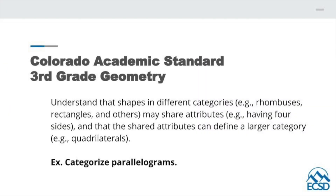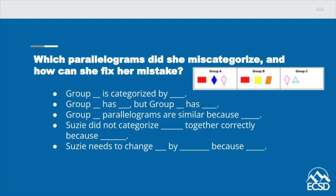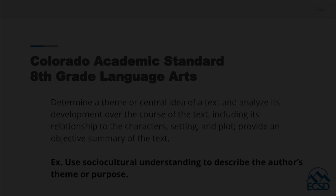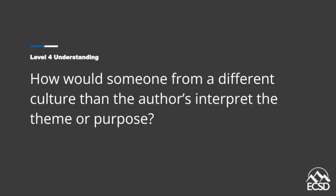Let's look at some examples of how students can achieve a 4. In third grade, students are expected to be able to categorize parallelograms. An example of a level 4 task could be evaluating a student's misconception — for example, Susie miscategorized several parallelograms. Which parallelograms did she miscategorize and how can she fix her mistake? In middle school, students are expected to use sociocultural understanding to describe the author's theme or purpose. One way to show level 4 understanding could be to compare how a person from a different culture than the author's would interpret the theme or purpose of a narrative fiction.